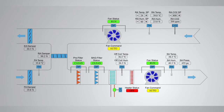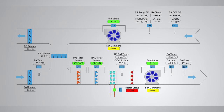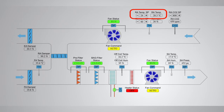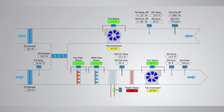Since this AHU is a 100% recirculating type, the return air temperature sensor reading is continuously monitored, as this temperature corresponds to the space temperature. By maintaining the return air temperature, the desired temperature within the space can be achieved. To maintain the return air temperature, the control valve actuator on the chilled water return line is modulated with a PID controller. The PID controller determines how much the valve should be opened or closed based on the temperature difference between the set point and the actual measured temperature. If the actual measured temperature is higher than the set point, the PID controller will open the control valve to allow more chilled water to pass through the cooling coil.